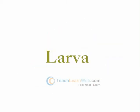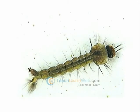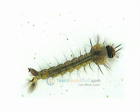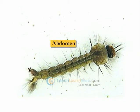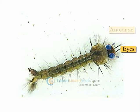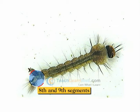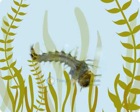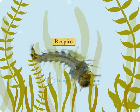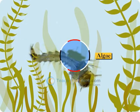Larva. The larva of the mosquito is called a wriggler. Its body is segmented into head, thorax, and abdomen. The head has a pair of compound eyes, antennae, and feeding brushes. It respires through the eighth of the nine segments in the abdomen. It frequently comes to the surface of the water to respire, and feeds on algae and small organic particles.